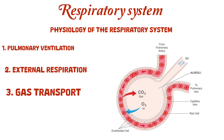Number three is gas transport. Once oxygen enters the blood, it is carried mostly by hemoglobin to tissues throughout the body. Carbon dioxide is transported back to the lungs in three main forms: dissolved in plasma, converted into bicarbonate ions, and bound to hemoglobin as carbaminohemoglobin.